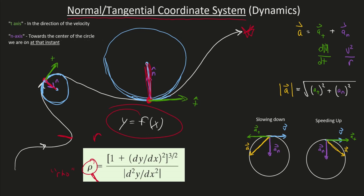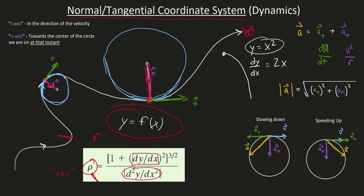For instance, if I was traveling on a ski slope where the slope was y equals x squared, that's my path. The formula requires the derivative of the path: dy/dx equals 2x. We also need the second derivative, y double prime, which equals 2. That's how you navigate this.